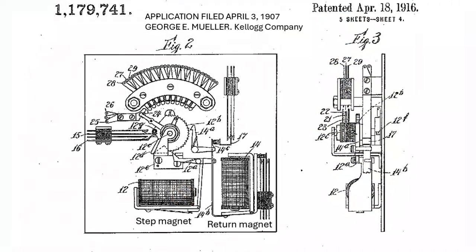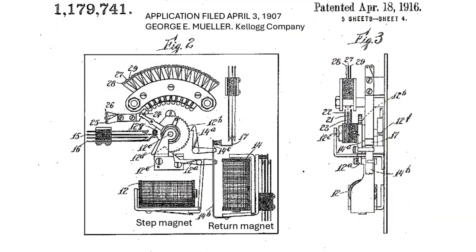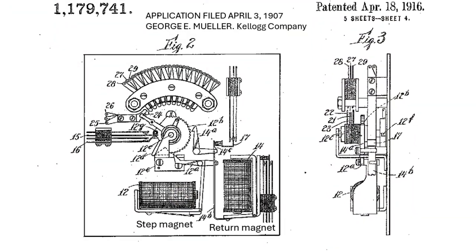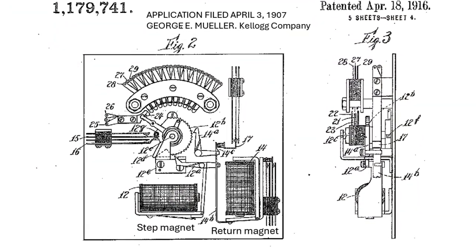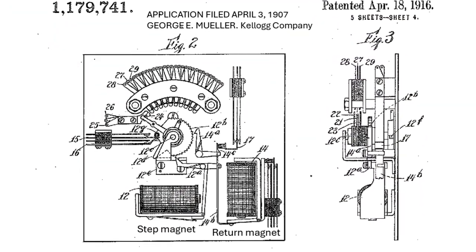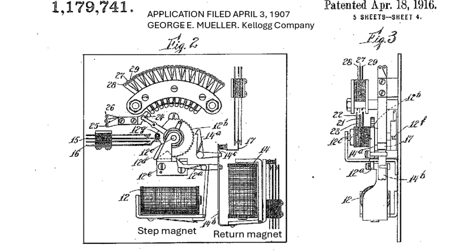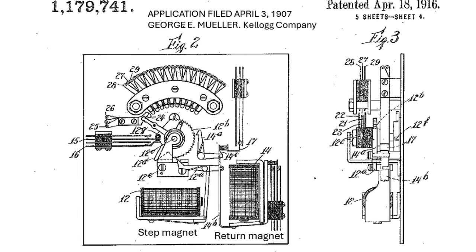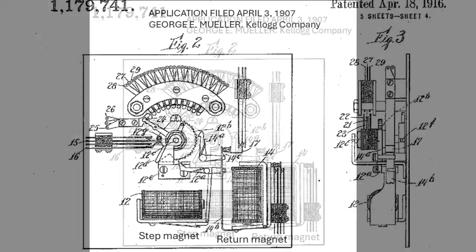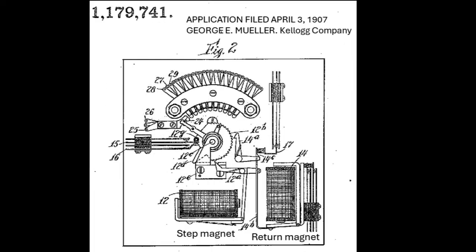In 1907, George Mueller made history. He filed a patent for the dream device, often called a minor switch. Why minor? Because it was a minor version of its larger brother, the major Strowger switch. The invention only had rotary motion.